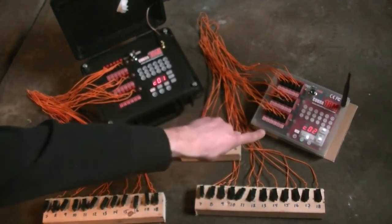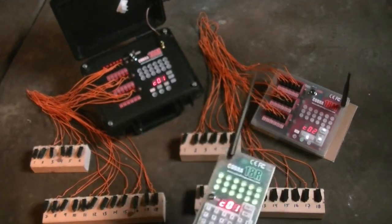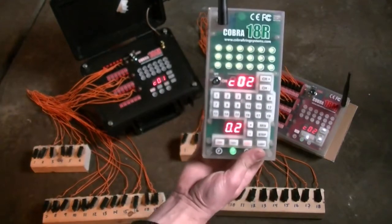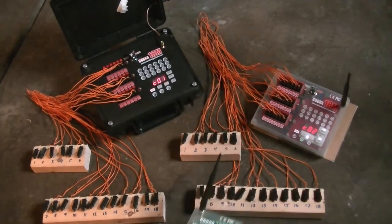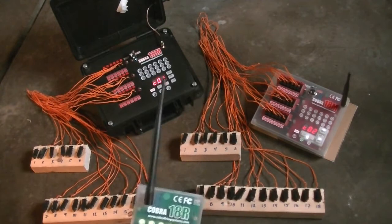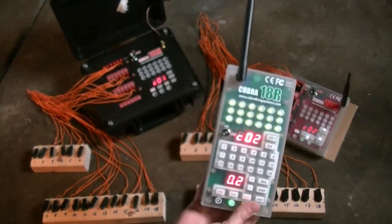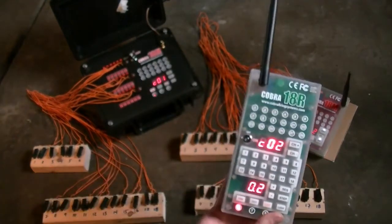Now this module is wired exactly the same way. If I switch to channel 2, you see I also have everything with good continuity, and this block is from 1 to 6 and this is from 7 to 18.